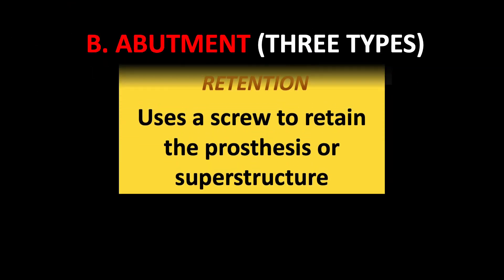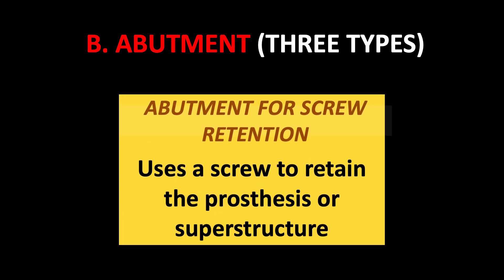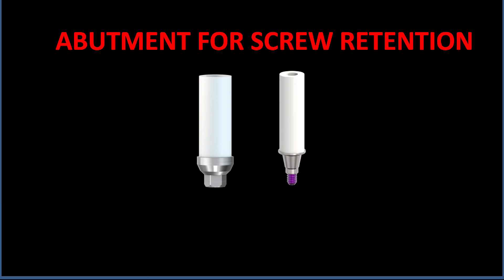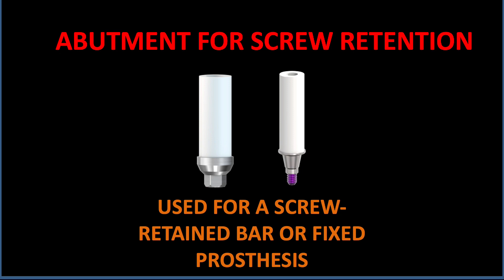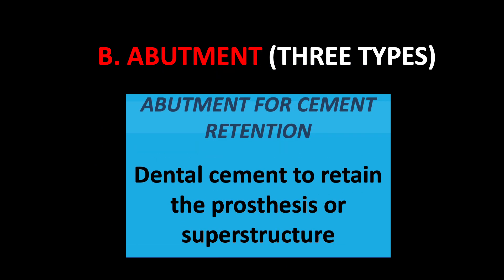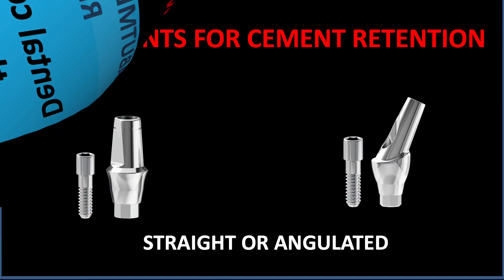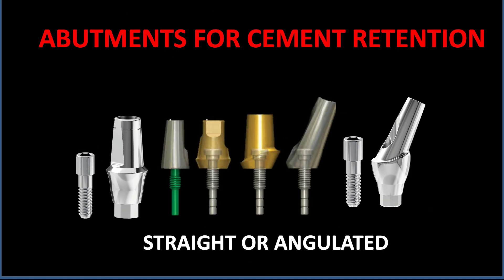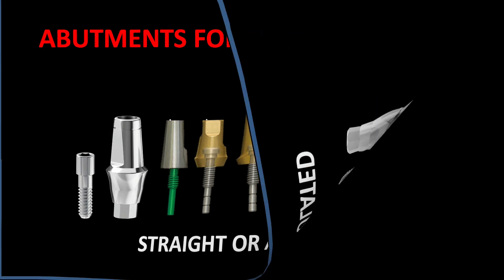In another classification of abutments, we have three different types: abutment for screw retention, abutment for cement retention, and abutment for attachment. The abutment for screw retention uses a screw to retain the prosthesis superstructure — the castable abutment is used for a screw-retained bar or fixed prosthesis. For cement retention, dental cement is used to retain the prosthesis, with different prefabricated abutments available — straight abutments and angulated abutments, the latter mostly used in anterior cases.